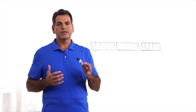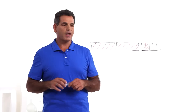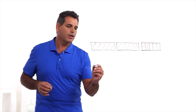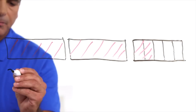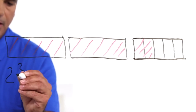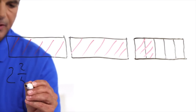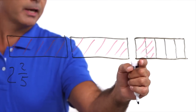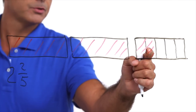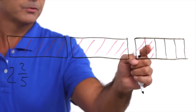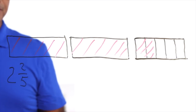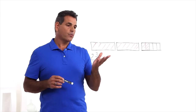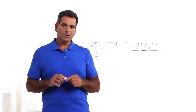Let's examine this with mixed numbers and bar models. This is a bar model that represents the mixed number two and two-fifths: two whole bars and two-fifths. Converting this mixed number is difficult with the way the model is constructed right now, so what we need to do is decompose the wholes into fractions of the same denominator, which is fifths.